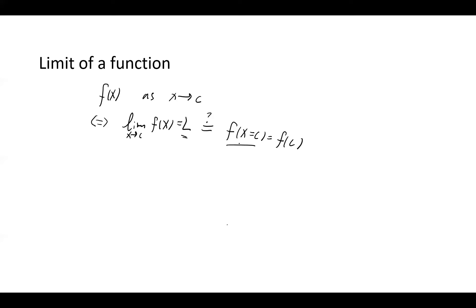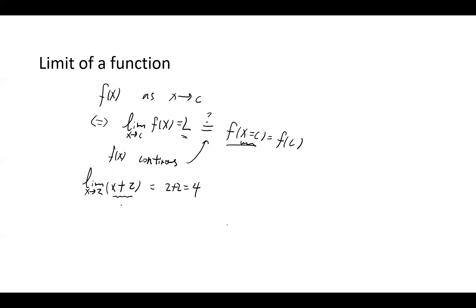Let's recall the condition: f(x) should be continuous. If f(x) is not continuous, then the limit may not equal the function value at that point. Let's look at a few examples, starting with continuous functions. We want the limit of x + 2 as x goes to 2. That gives 2 + 2 = 4, because this function is continuous — it's a straight line, continuous everywhere.